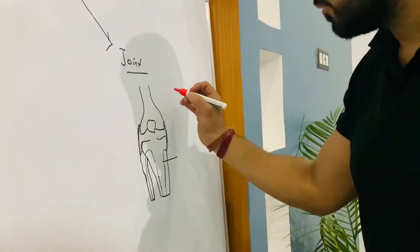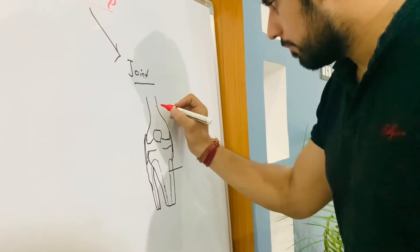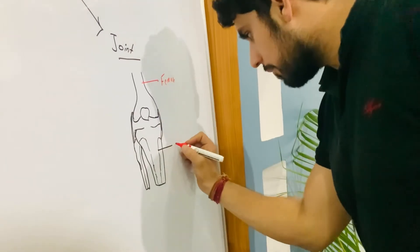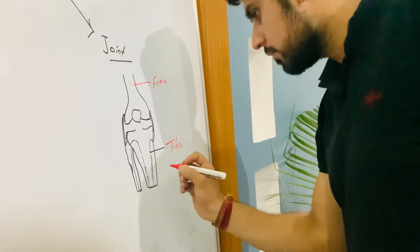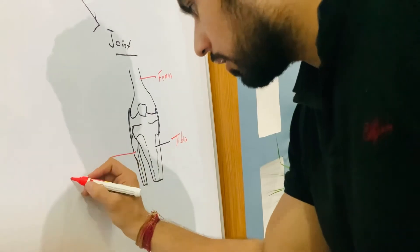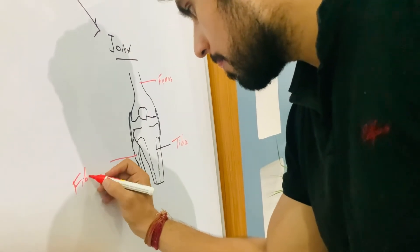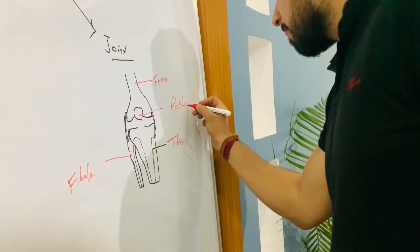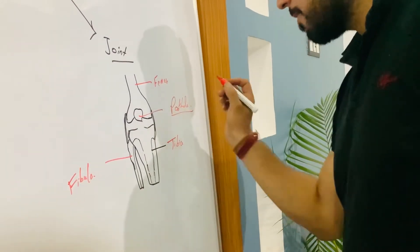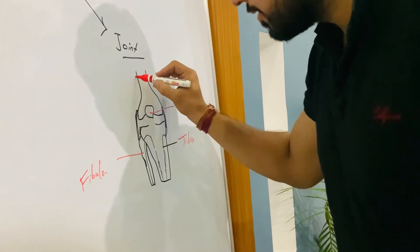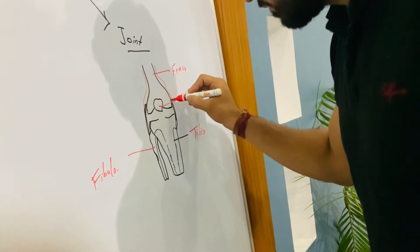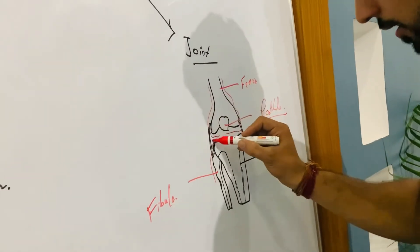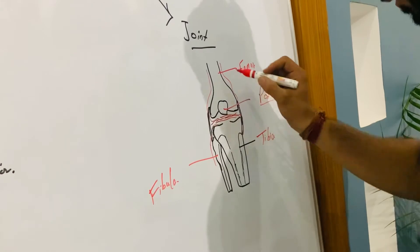This is our knee joint. The knee joint is composed of the femur bone on top, then the tibia and fibula below, and the patella at the front.